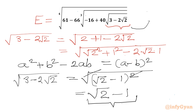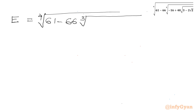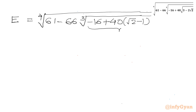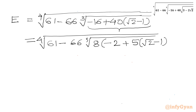Applying √2 − 1 back into the expression, we get E = 4th root of 61 minus 66·∛(−16) + 40·√2·(√2 − 1). Now I can take 8 as common from inside the cube root, giving 4th root of 61 minus 66·∛8·(−2 + 5(√2 − 1)). Since ∛8 = 2, this becomes 4th root of 61 minus 132·(−2 + 5(√2 − 1)).